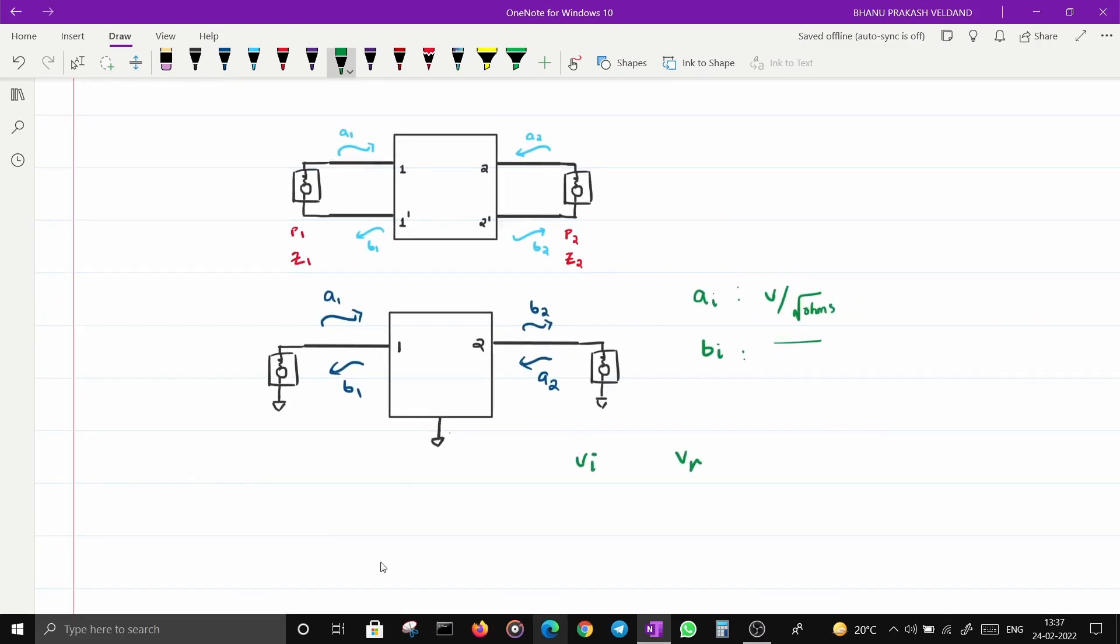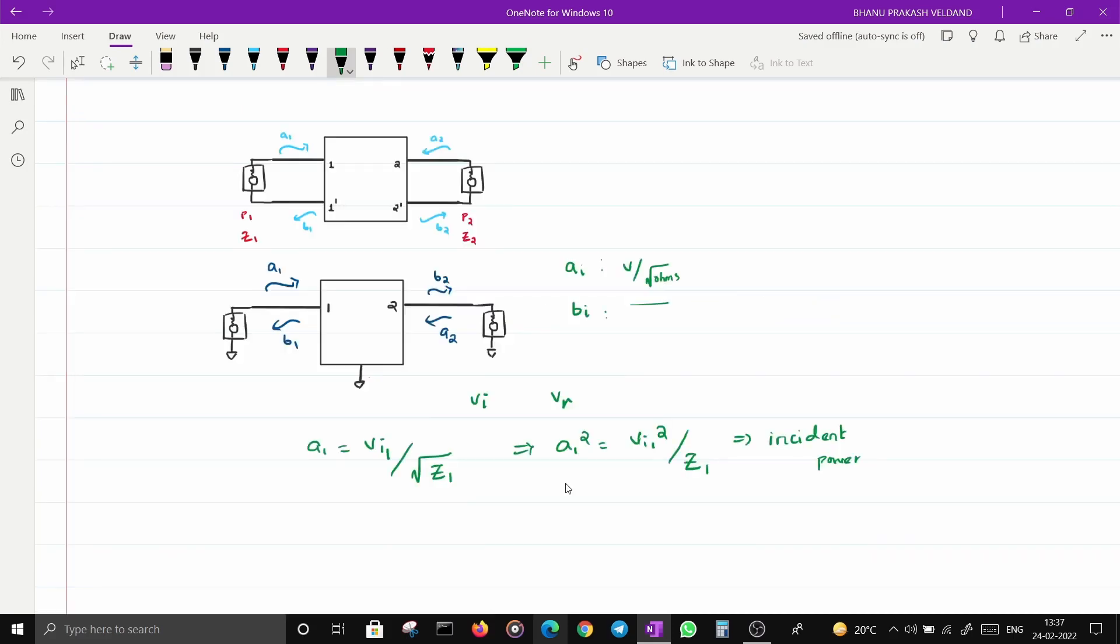In that case we can write A1 as V incident wave at port 1 divided by root of Z1, the reference impedance. If I square A1, I get V_I^2 / Z1, which is nothing but incident power. Extending this, A2 is V_I2 divided by root of Z2.